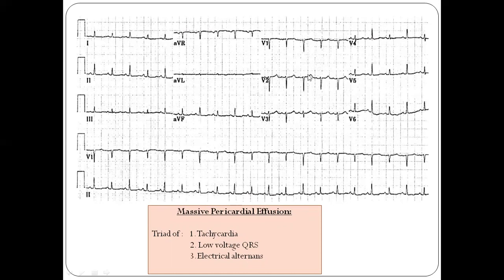An important characteristic visible here is electrical alternans — notice the morphology of the QRS: one beat is large, then small, then large again, alternating small and large. This alternating pattern is characteristic of massive pericardial effusion or cardiac tamponade.